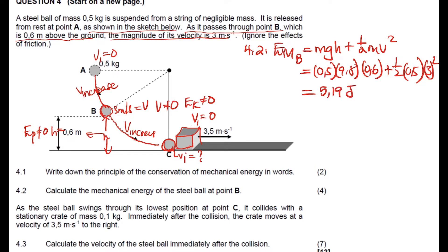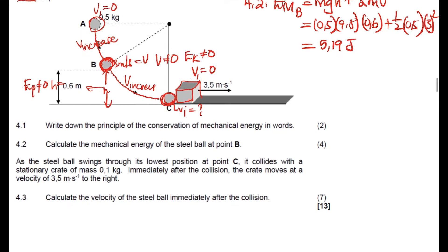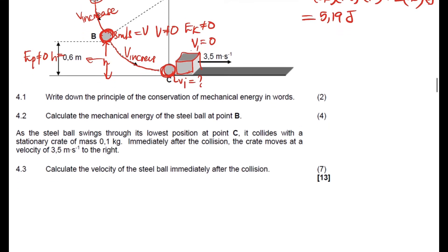This 5.19 joules is the mechanical energy at point B. Because the problem says to ignore the effect of friction, the mechanical energy at point A equals the mechanical energy at B, which also equals the mechanical energy at C. The mechanical energy is conserved everywhere.